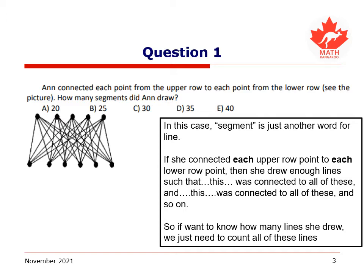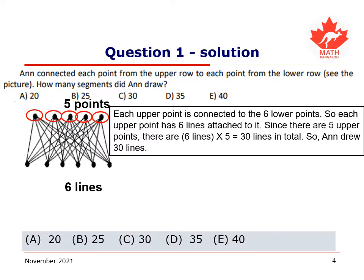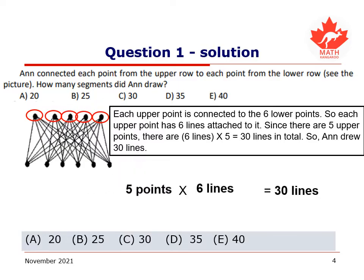If she connected each upper row point to each lower row point, then she drew enough lines such that each upper point is connected to all of the lower points. So if we want to know how many lines she drew, we just need to know how many lines it takes to make all of these connections. Each upper point is connected to six lower points, so each upper point has six lines attached to it. Since there are five upper points, six times five equals 30 lines in total. So Ann drew 30 lines, and 30 is the answer.